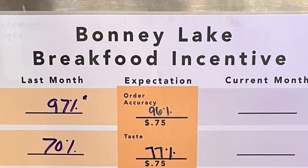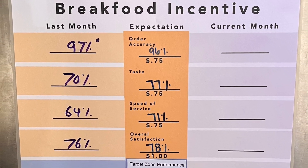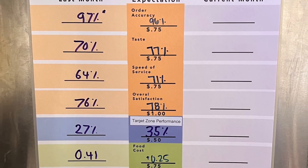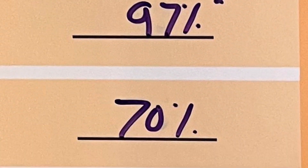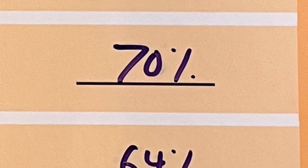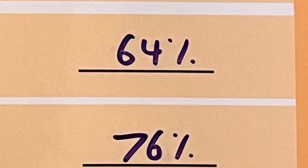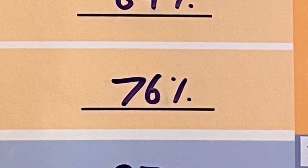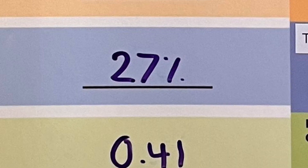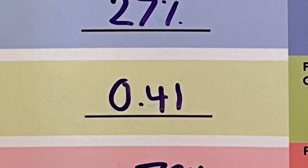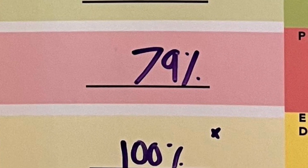You've probably passed by our break food board before and wondered how you affect it. Let me briefly go over this. On the left hand side is what is currently in place for break food. That's updated on the 1st and 15th of each month. At the bottom is the sum of all those things, starting with a base of $6.